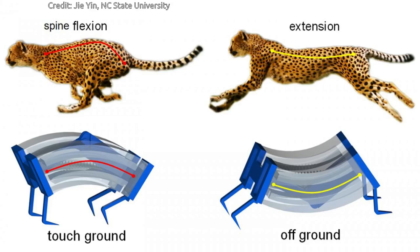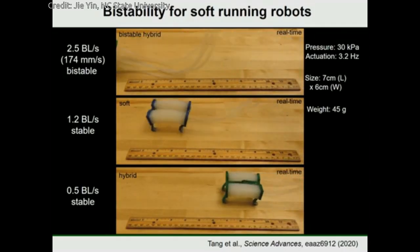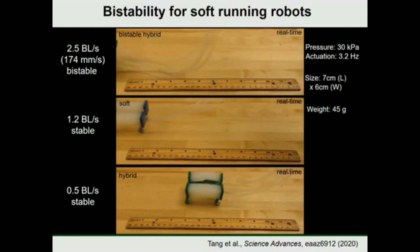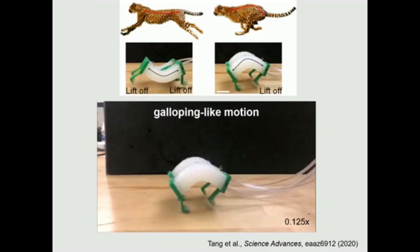Inspired by the biomechanics of cheetahs, researchers have developed a new type of soft robot that is capable of moving more quickly on solid surfaces or in the water than previous generations of soft robots.